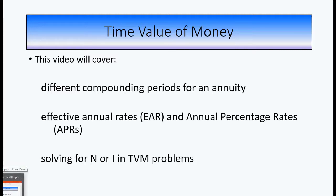This video continues the series on time value of money. We'll look at different compounding periods for an annuity, which will lead us into effective annual interest rates. Then we'll look at techniques for solving problems for the number of periods N, or solving for the interest rate. Let's move on to pencil and paper to do the analysis.